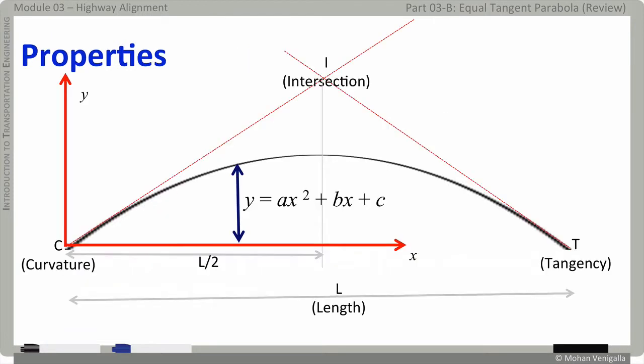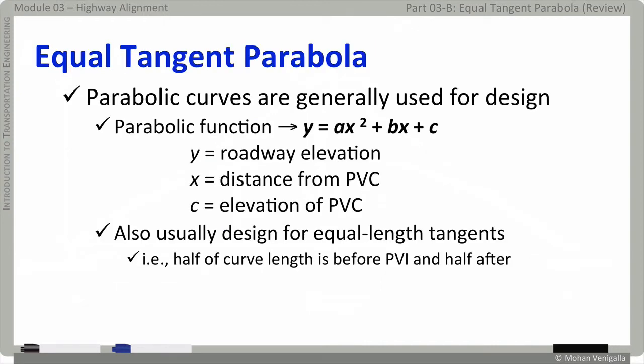Now we are going to derive some critical formula based on the equation of parabola, Y equals AX square plus BX plus C. In here, Y is roadway elevation at a distance X from PVC. And usually, C, the constant of parabola is the elevation of PVC itself. And we already talked about this. Half the curve length is before PVI and the other half is after PVI. That's just the property of parabola.